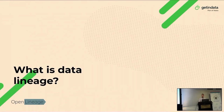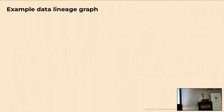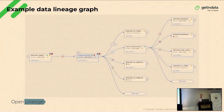So let's start with the definition: what is data lineage? It's a relationship between data sets and jobs — so not only a dataset-to-dataset relation, but also something that processes this data. You can think about it as a kind of graph, something like a DAG in Airflow, but with data sets in between. Here's an example of a lineage graph in Atlan, which includes both data sets and jobs.